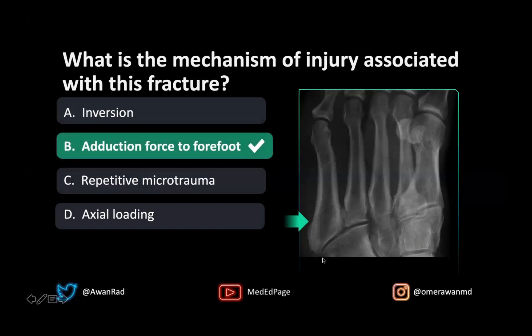A pseudo-Jones fracture is usually right here — it's on the very base of the fifth metatarsal. That's usually an inversion injury, and it results when there's an avulsion of the lateral cord of the plantar fascia or where the peroneus brevis inserts along the base of the fifth metatarsal. So when you have an avulsion of either of those two structures, you often get a pseudo-Jones fracture, and that's an inversion injury.